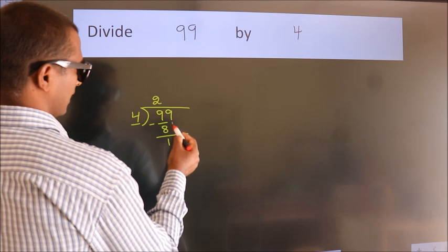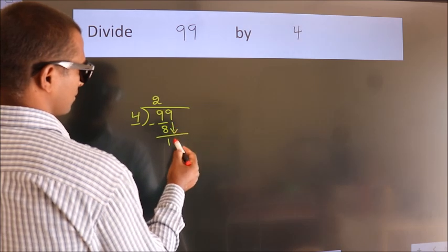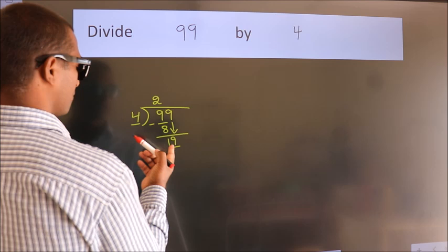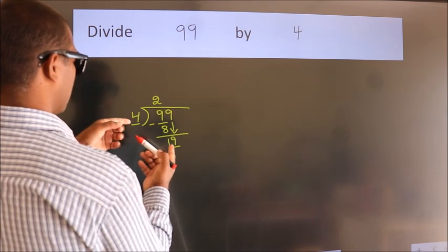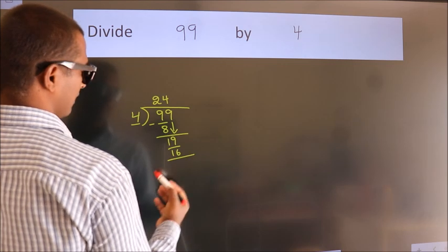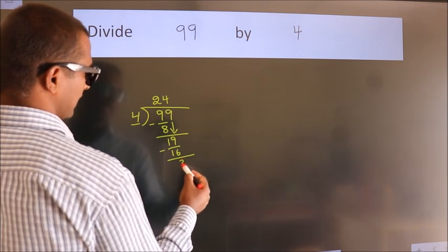After this, bring down the beside number. So 9 down. So 19. A number close to 19 in the 4 table is 4 twos, 16. Now, we subtract. We get 3.